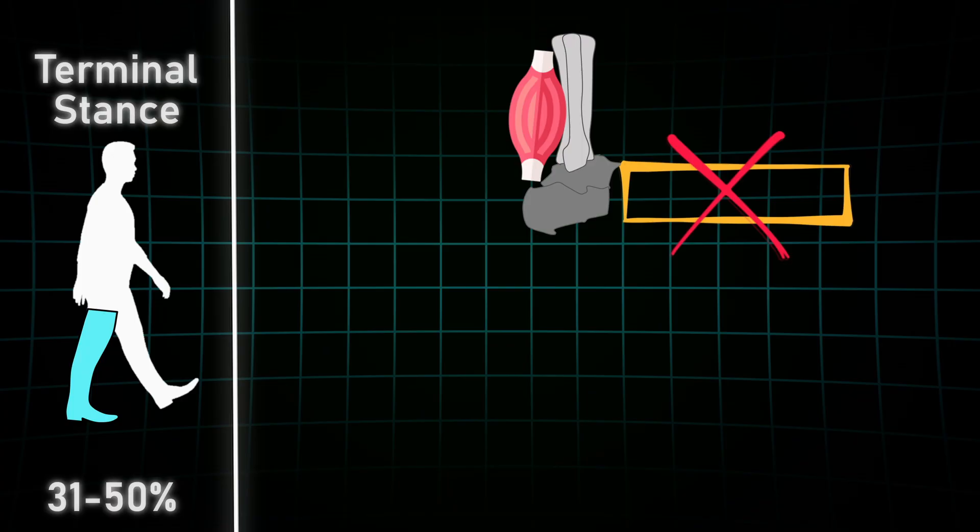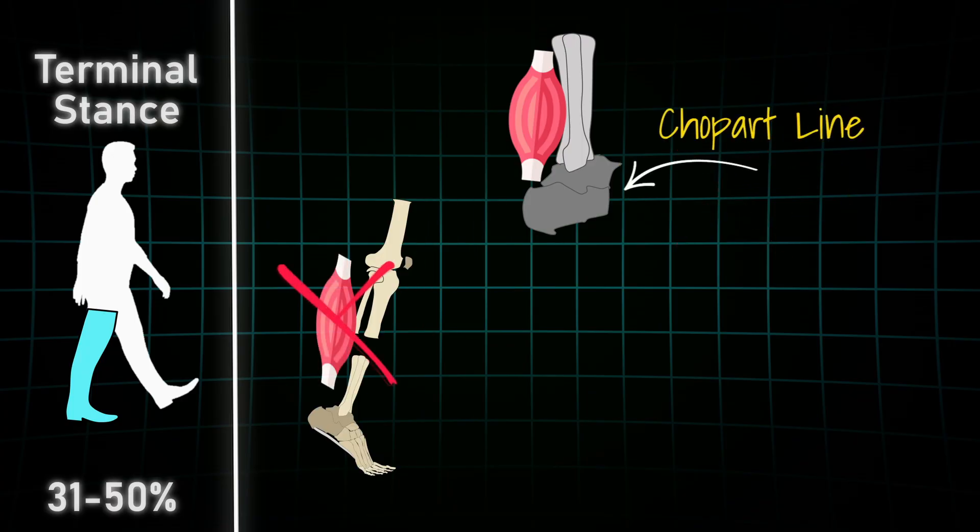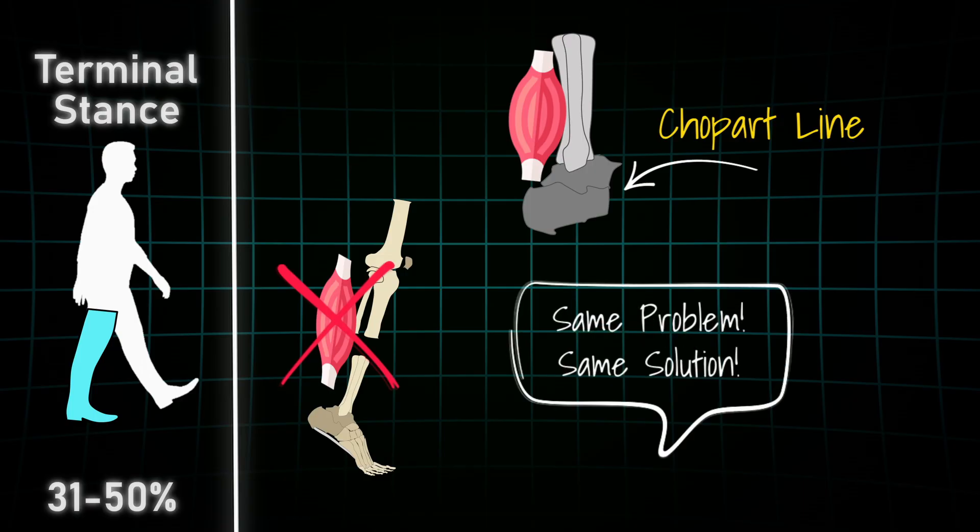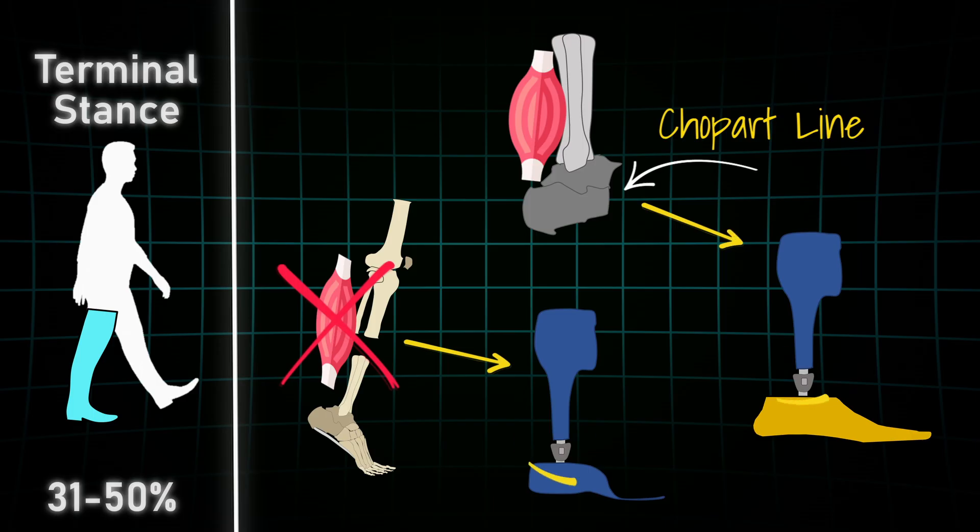And this is the reason why forefoot amputations, beginning at the Chopart level, and calf weaknesses should be treated biomechanically the same. By substituting the function of the calf by an AFO with a dorsiflexion stop, a sufficient forefoot and a ventral shell. Biomechanically completely the same.